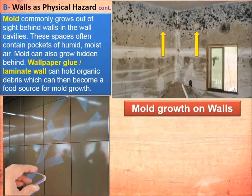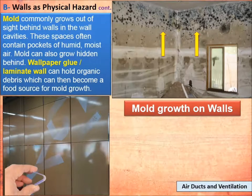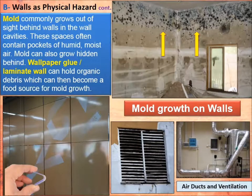As seen in the photo, mold mainly grows under wallpaper glue if decorative coverings are used, and even behind laminate wall panels. We must ensure there are no gaps between the laminate wall and the actual wall to avoid mold growth in between, which is caused by the same factors: humidity, condensation, or water leaks.